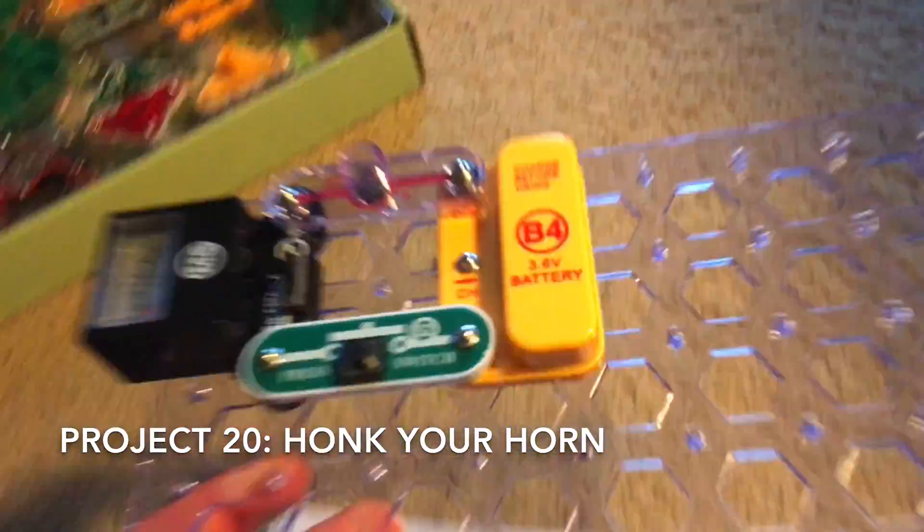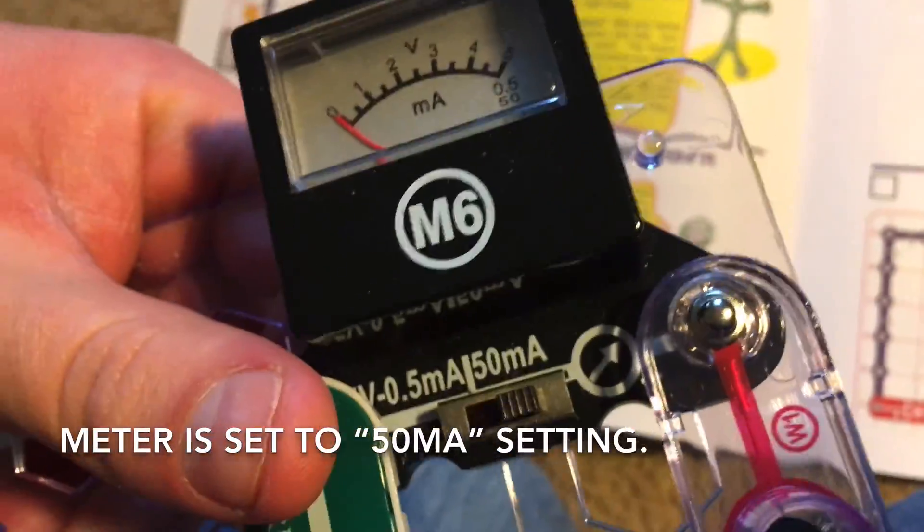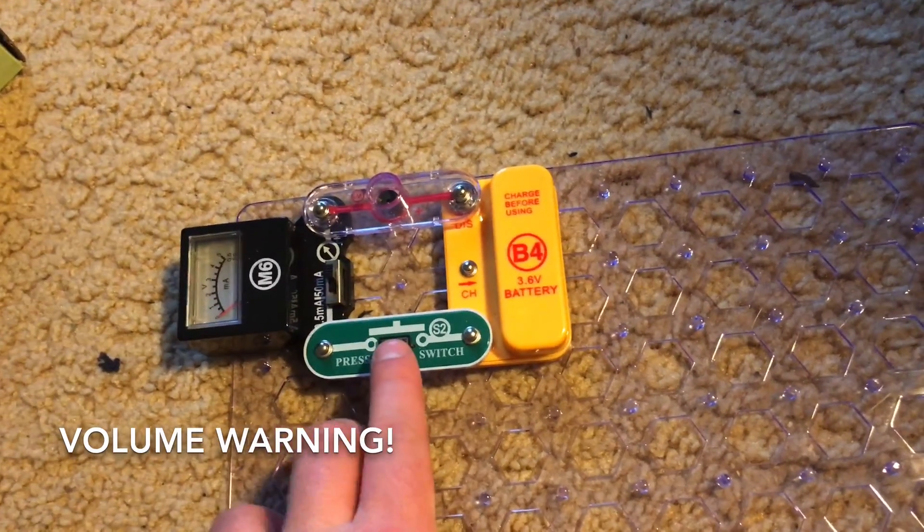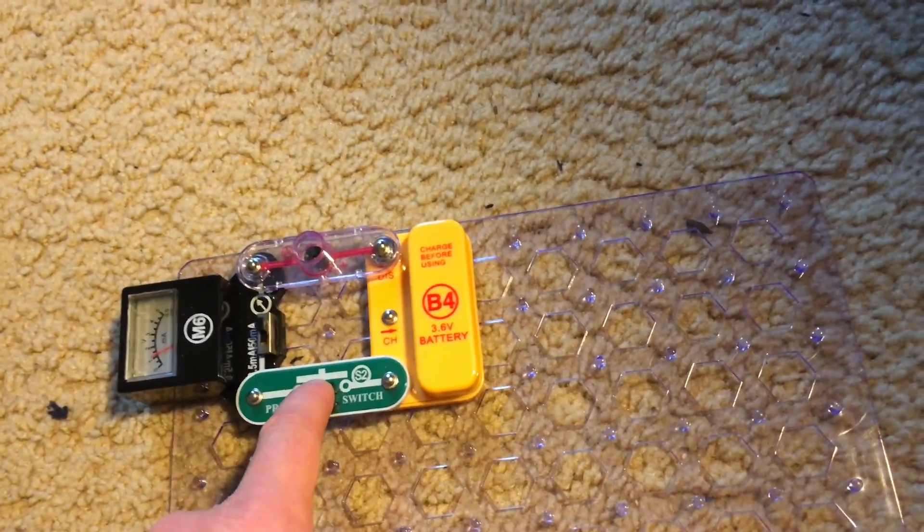This circuit is very simple. With the meter on the 50 milliamp setting, I'm going to hit the press switch, volume warning, and the horn will sound.